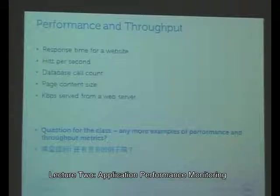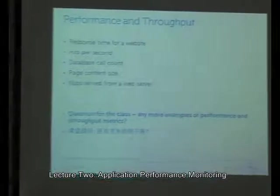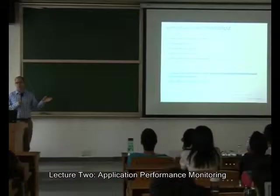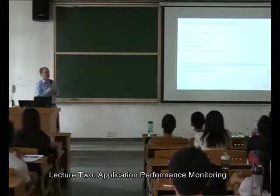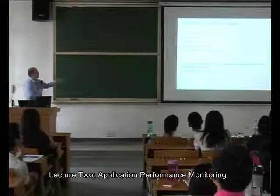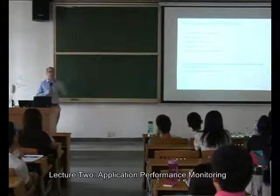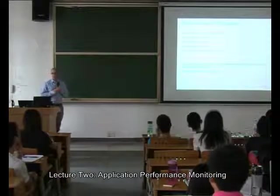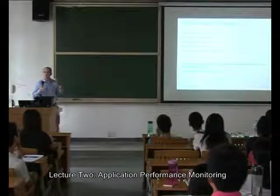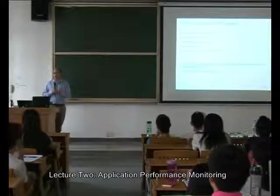For performance and throughput, I categorize these together because they're really about what the end user cares about. Application performance management cares most about these metrics. Examples include: response time for your website — how long it took to log in; how many hits per second, which is a throughput measurement; how many database calls were made; and page content size — how many bytes were downloaded to display the page over time.